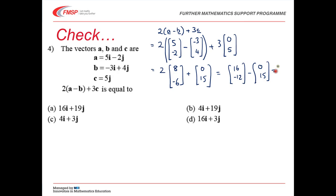And that is sixteen. I seem to have lost a sign. Oh, sorry. It should be add. Sixteen minus twelve, add fifteen is three. So that's sixteen three. Which is sixteen I plus three J. And that is option D.